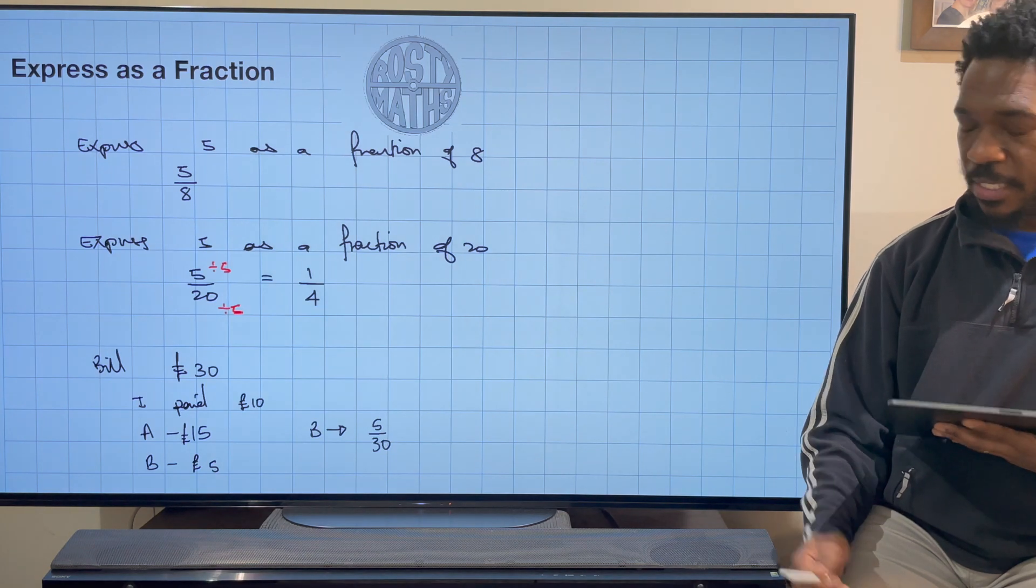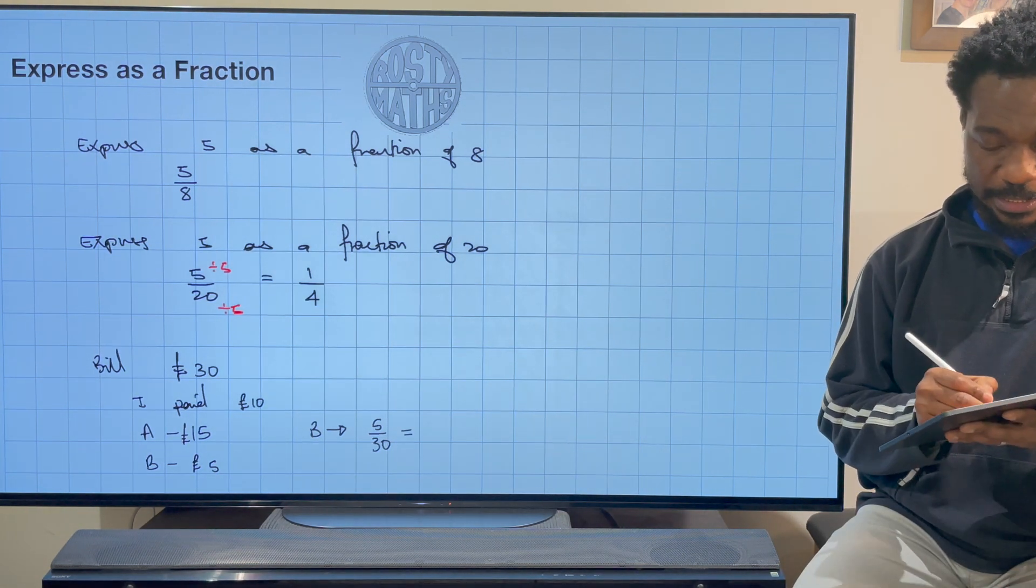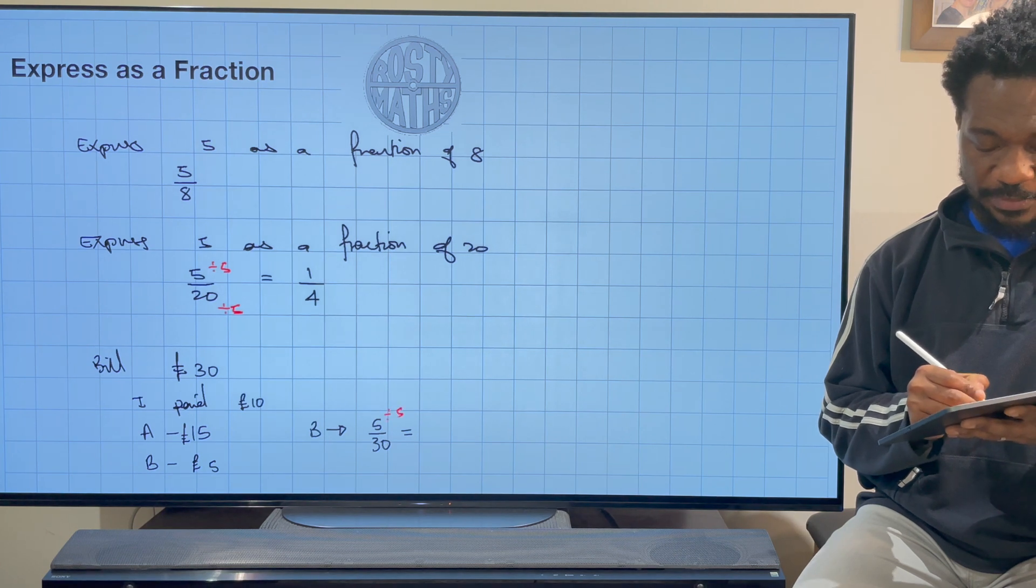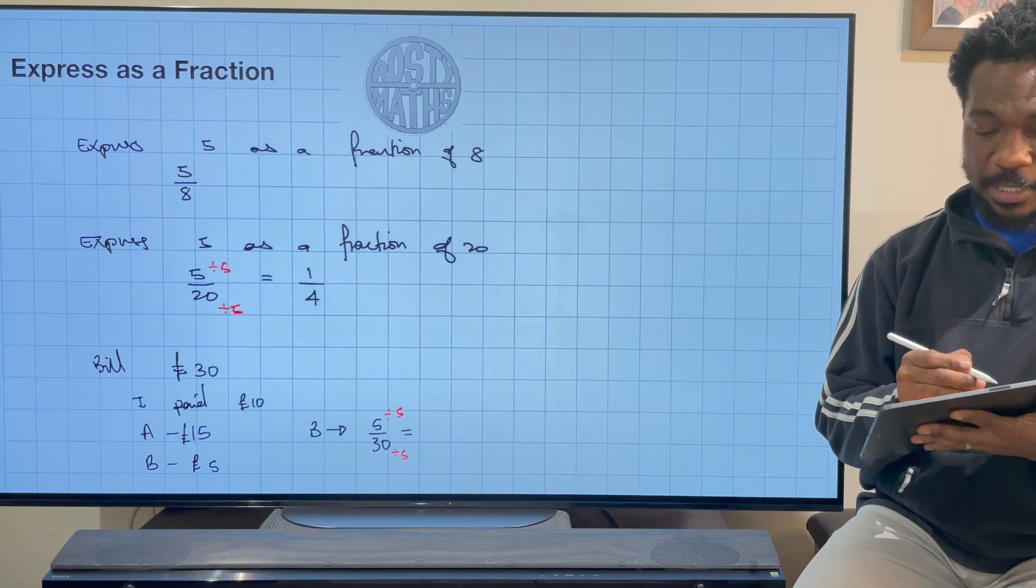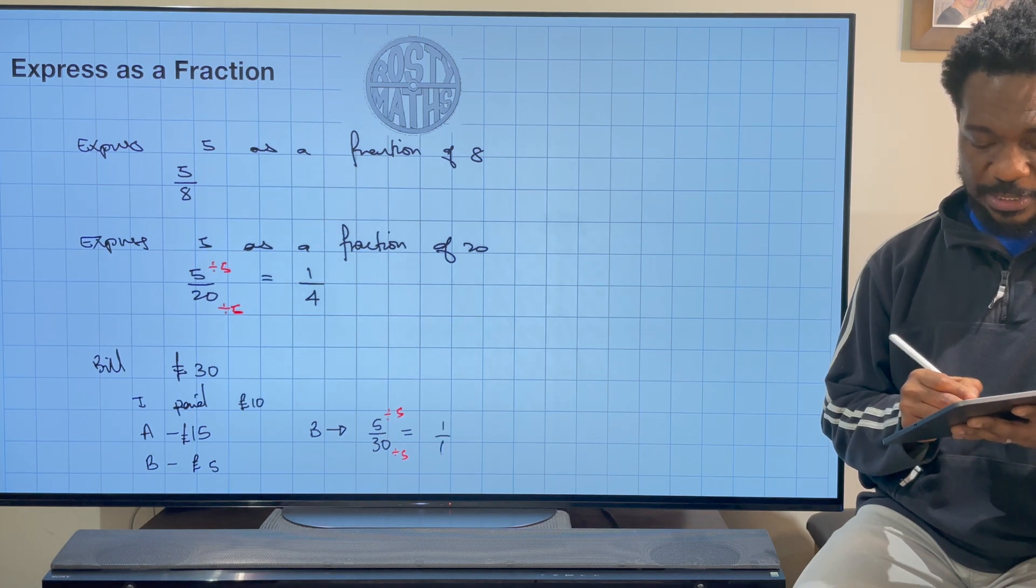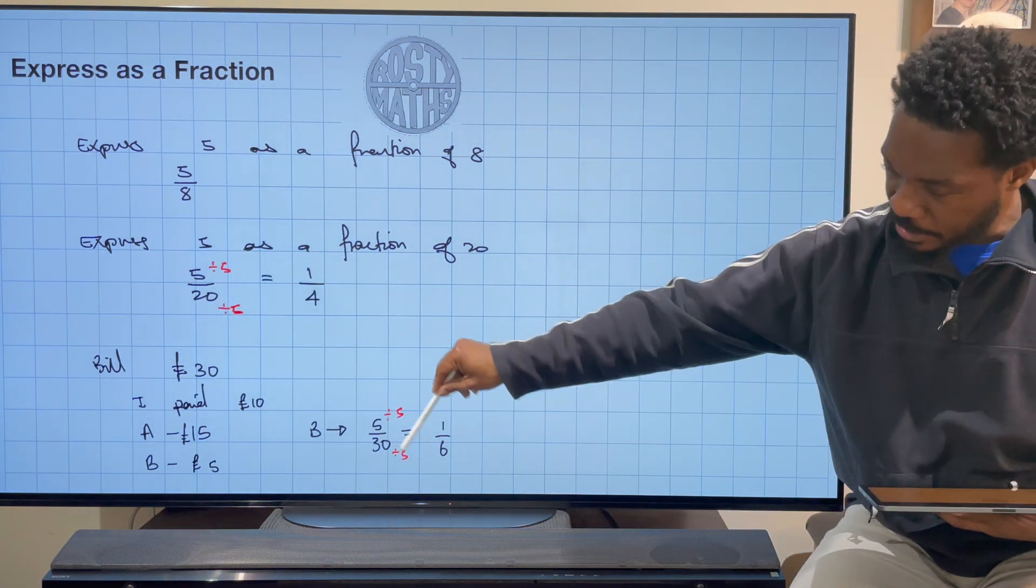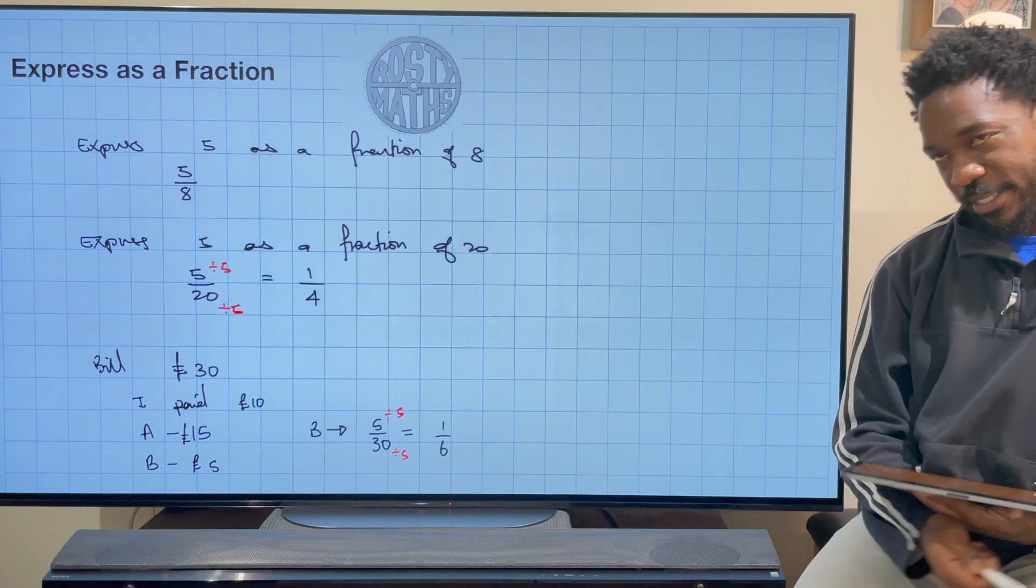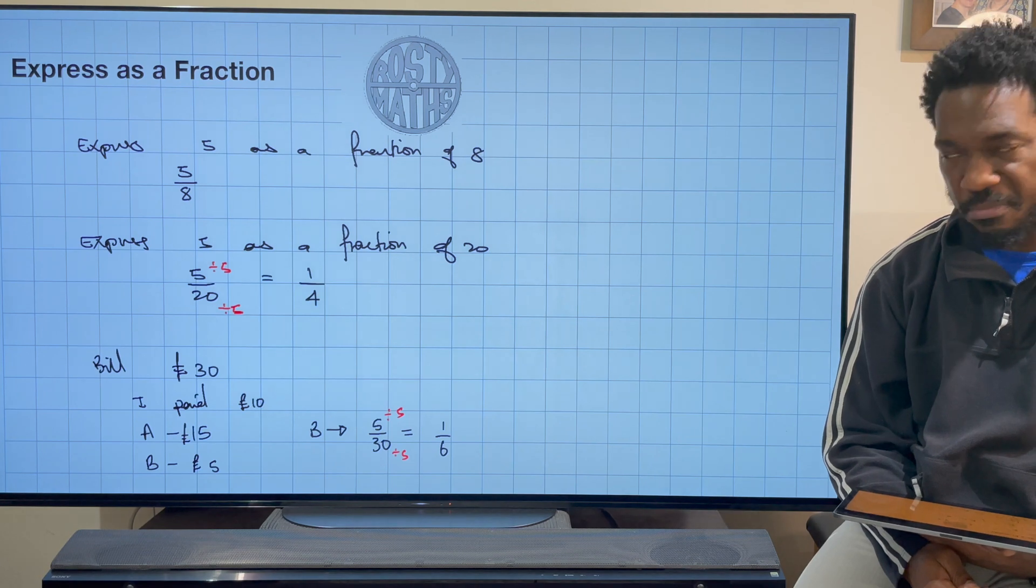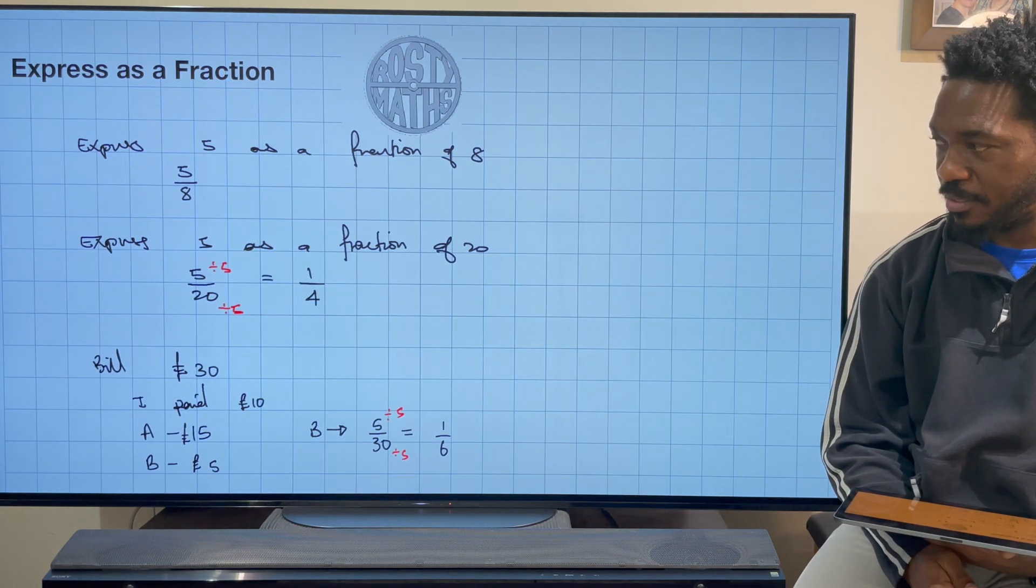And then we can simplify that by dividing by 5 again, only to find out that the fraction of the bill that they paid is one sixth, because 5 divided by 5 is 1, 30 divided by 5 is 6. So they paid one sixth of the bill. Yeah, that's not very good, is it?